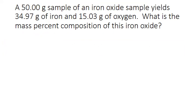This is a sample of data that you might get from experimental analysis of a compound composition. A 50 gram sample of an iron oxide yields 34.97 grams of iron and 15.03 grams of oxygen. What's the mass percent composition of this compound? We need to use that percent composition formula twice, once for iron and once for oxygen.